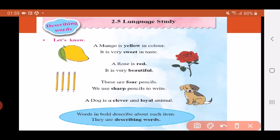So all these words that are written in bold, bold means they are written in dark black, they are highlighted. All these bold words are describing about each item. Therefore we call them as describing words. I hope you have understood what is the meaning of describing words.